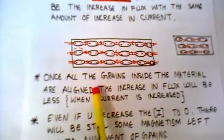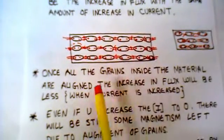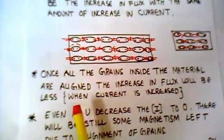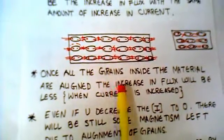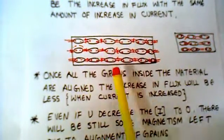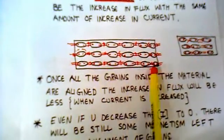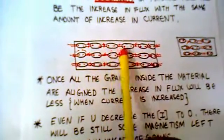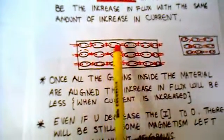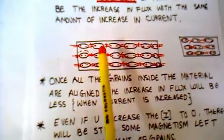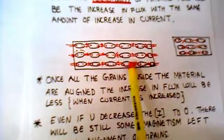And once all the grains inside the material are aligned, the increase in flux will be less, or the flux will almost become constant. That means when you have reached the position in which you have aligned all the grains, this is the position what we call saturation.